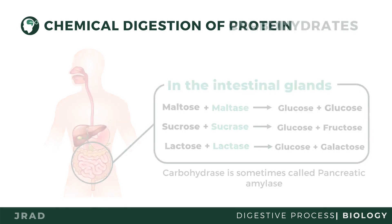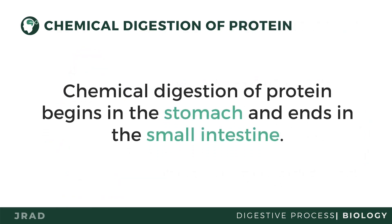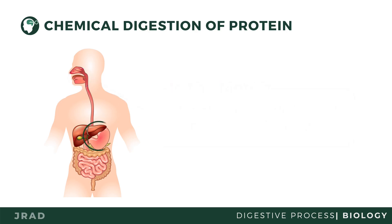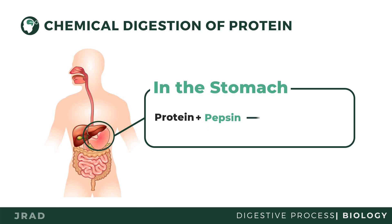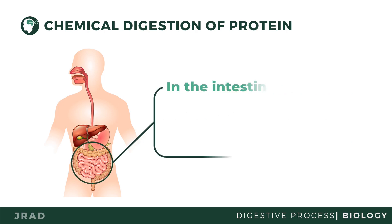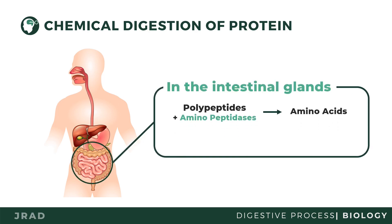Chemical digestion of proteins begins in the stomach and ends in the small intestine. The digestion of protein is mostly mechanical in the mouth region — the teeth break down protein-containing foods such as pork, beef, and other meats into smaller pieces. In the stomach, an enzyme called pepsin is secreted by the chief cells and changes protein into small polypeptides. Trypsin in the pancreatic juice repeats the work of pepsin to ensure protein molecules are changed into polypeptides. Lastly, the intestinal glands secrete aminopeptidases and erepsin to change the polypeptides and dipeptides into amino acids.